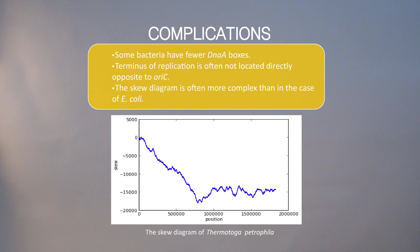What I described is a very idealistic view of how the origin of replication can be found. In reality, some bacteria have fewer DnaA boxes, and our frequent words algorithm won't work for finding them. The terminus of replication is often not located directly opposite to the origin of replication, and the skew diagram is often more complex than in the case of E. coli.